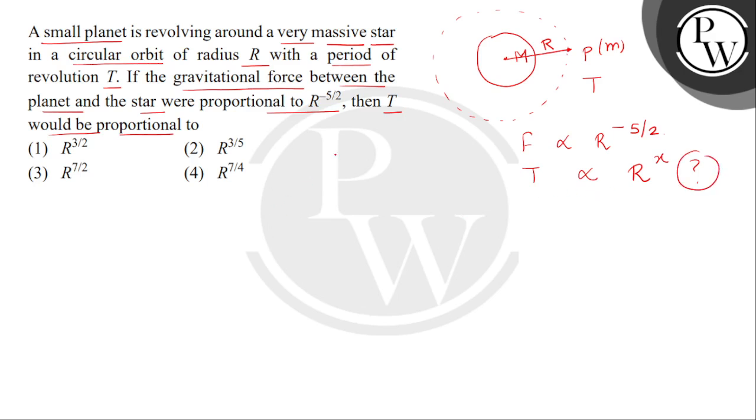So bachiyo, सबसे पहले हम यहां लेंगे कि gravitational force is equal to capital G, capital M, small m, divided by r to the power 5 by 2. यहां पर हम Newton's law के according ही ले रहे हैं, but gravitation में inverse square law आता है. तो यहां हमें defined है कि जो F है, वो inversely proportional होगा r to the power 5 by 2 के. इस massive star और planet के बीच में जो gravitational force लगेगा, that will be balanced by the centripetal force.